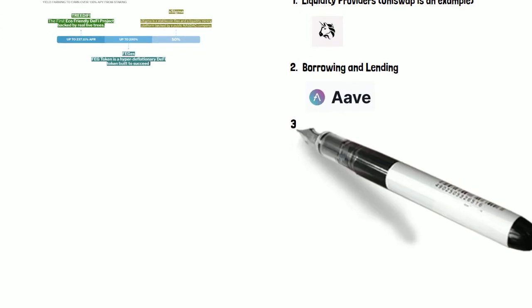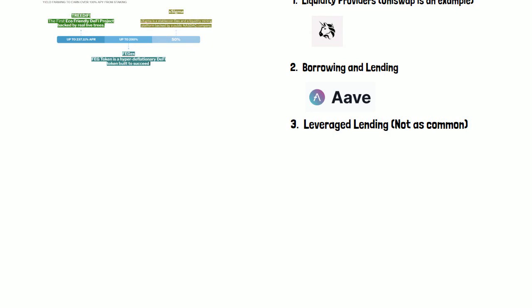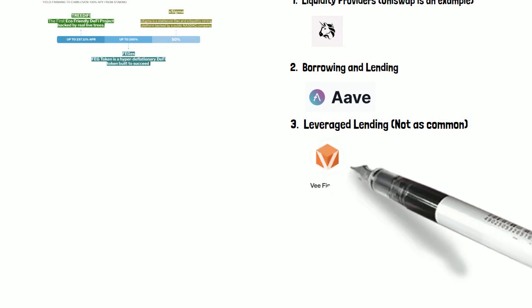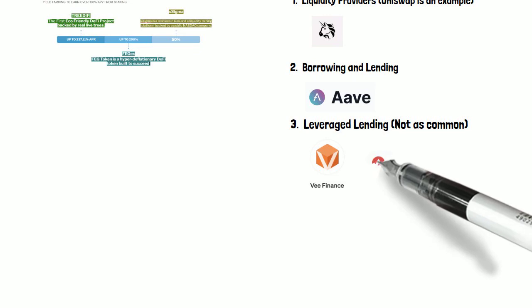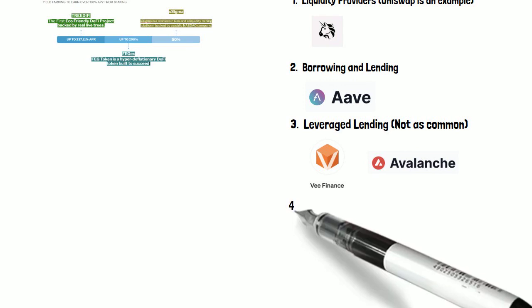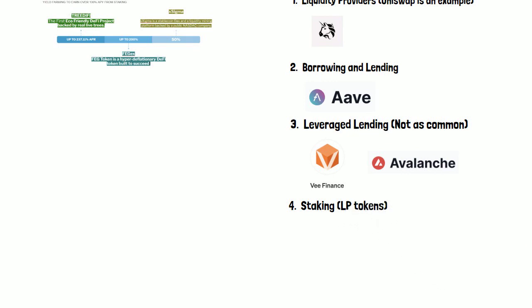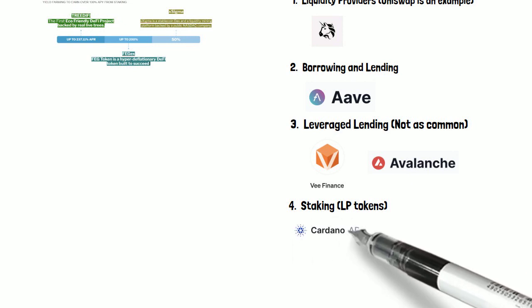Another approach is borrowing and lending. Aave is very well-known as a borrowing and lending platform, and there are quite a few others as well. You can be a lender on the platform or a borrower — that's up to you. Leverage lending is another, less common option. One project I'm aware of is V.Finance, which is on the Avalanche blockchain. The Avalanche blockchain has been doing really well, and hopefully V.Finance has been proceeding well alongside it.